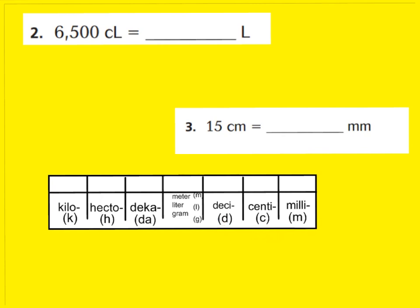Let's go ahead and begin question 2. It says 6,500 centiliters is equal to how many liters? Let's find CL on our chart — that stands for centiliters. I know that centiliters are smaller than liters. My liters are 100 times smaller. Because I have 6,500 centiliters and I want to know how many liters it equals, I want to go from a smaller unit to a larger. When you go from a small unit to a large unit, you divide.